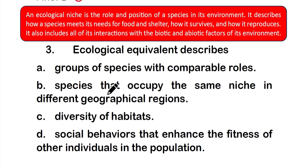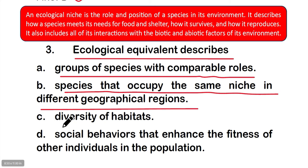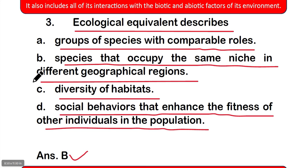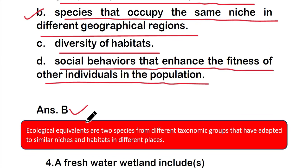Question number three: Ecological equivalent describes — option A: groups of species with comparable roles; option B: species that occupy the same niche in different geographical regions; option C: diversity of habitats; or option D: social behavior that enhances fitness of other individuals. The right answer is option B. Ecological equivalents are two species from different taxonomic groups that have adapted to similar niches and habitats in different places.